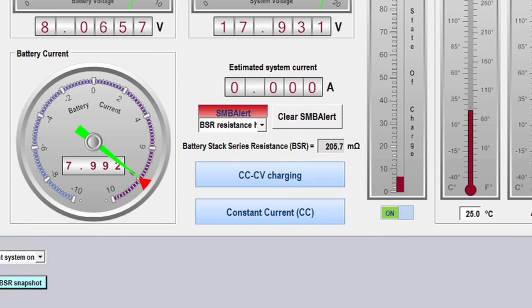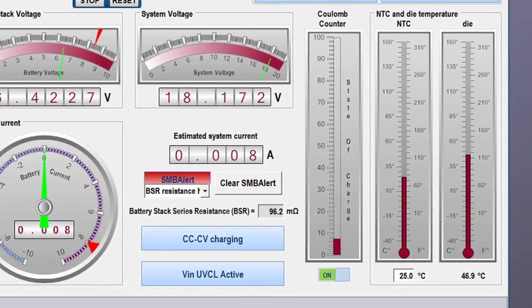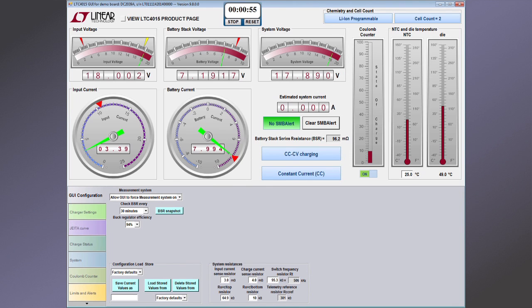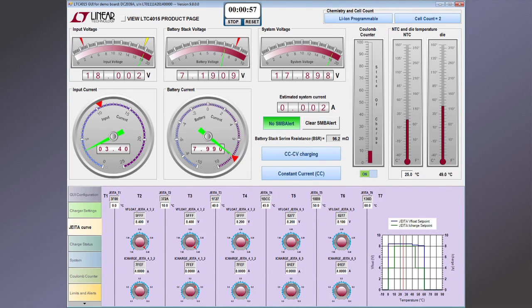I can reduce the series resistance, take a BSR measurement, and clear the alert. Now let's check back on the Coulomb counter. The stopwatch indicates that about 45 seconds have passed and you can see that the Coulomb count has increased from its initial value of 0% to about 7 or 8%. Perfect.